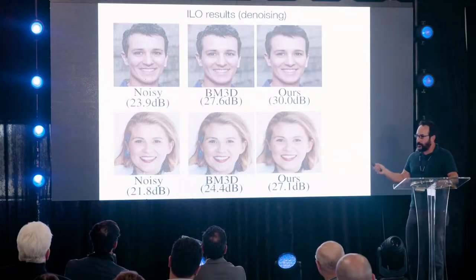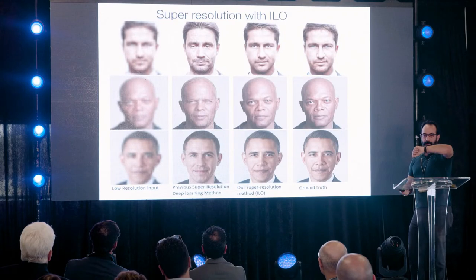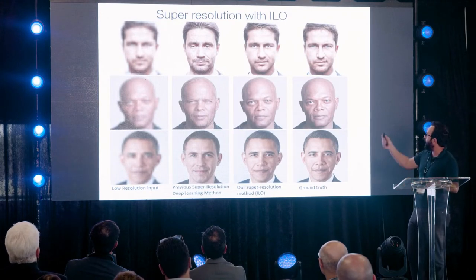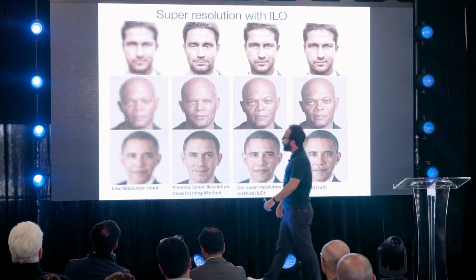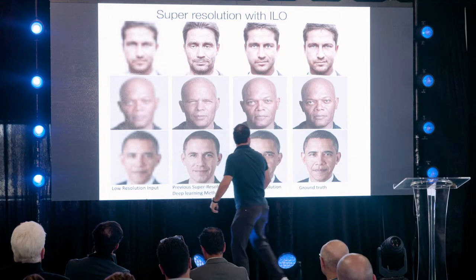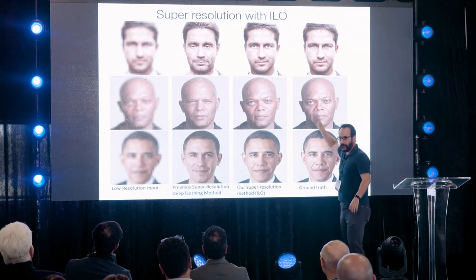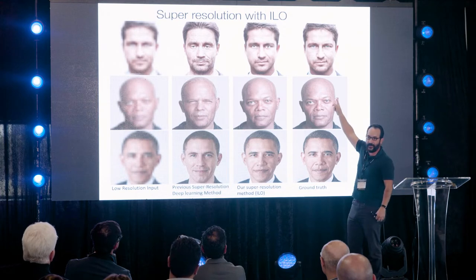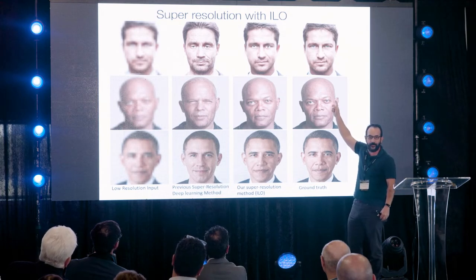We can also do denoising and super resolution. You observe blurry images — the ground truth includes recognizable people. The neural network observes those blurry inputs and our algorithm reconstructs a much sharper column compared to the previous state of the art.